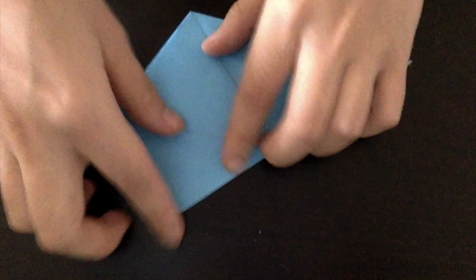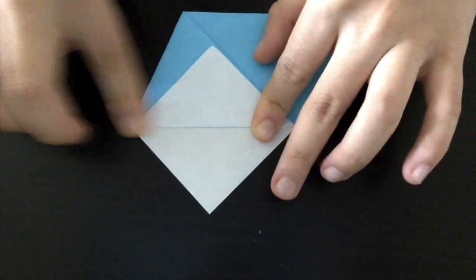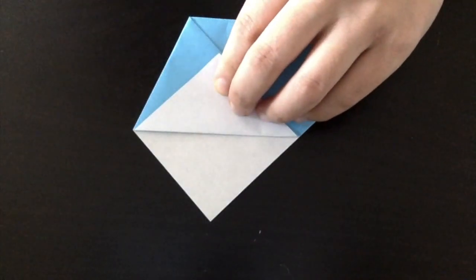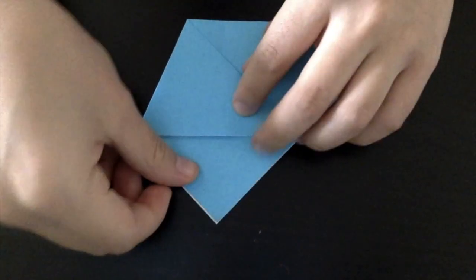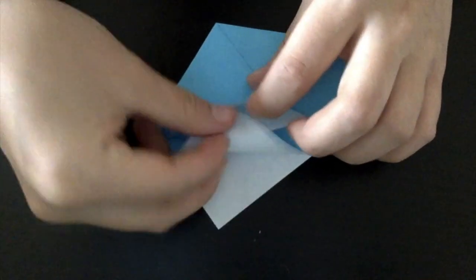Next, you're going to fold down that top triangle down over that new triangle you just created. Then, you're going to unfold that triangle and then you're going to fold it into that triangle that we created before.